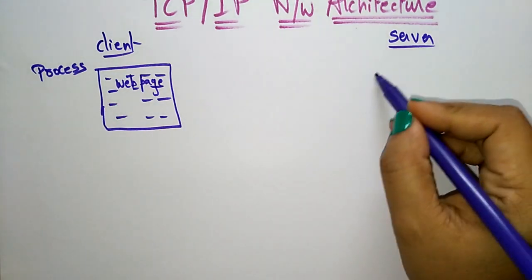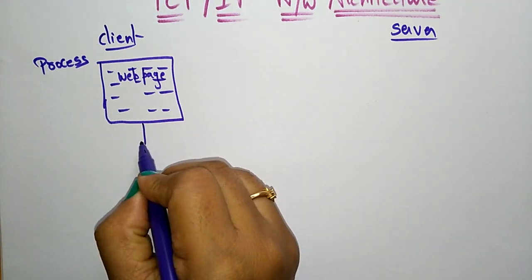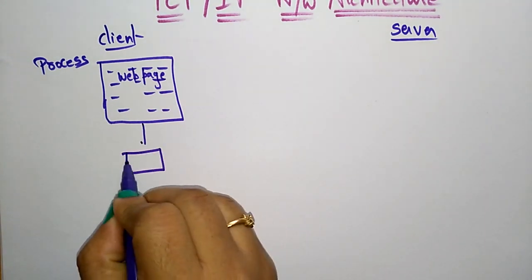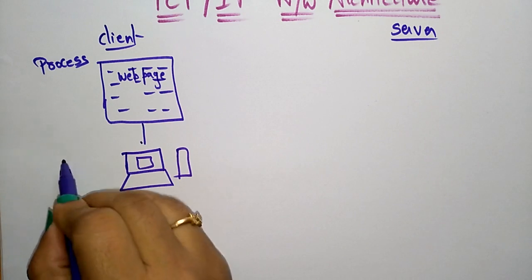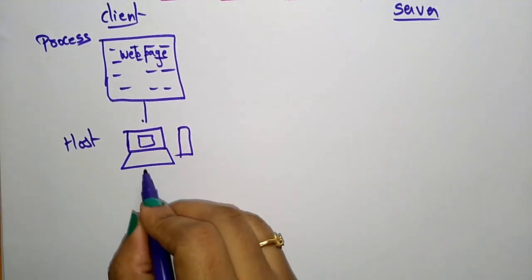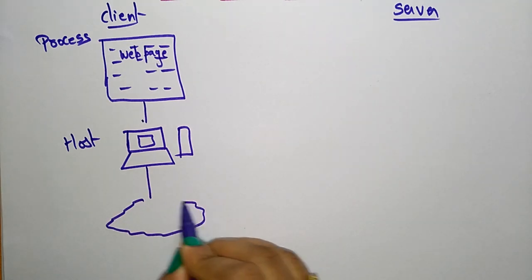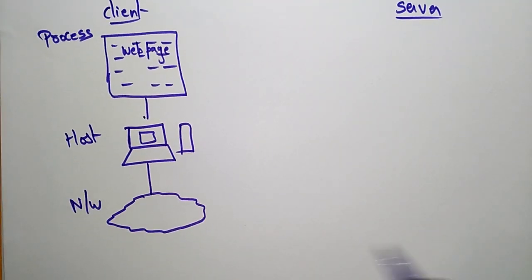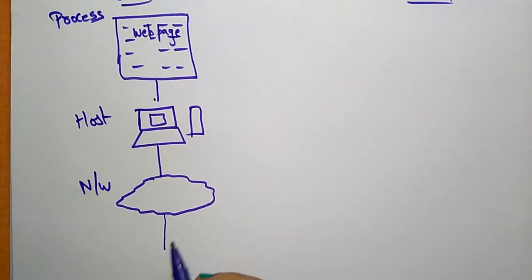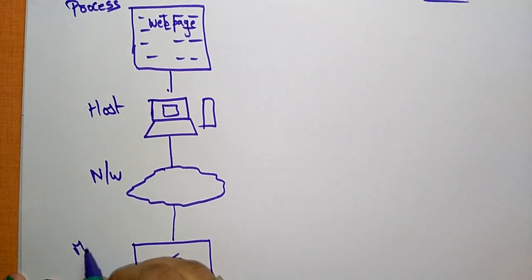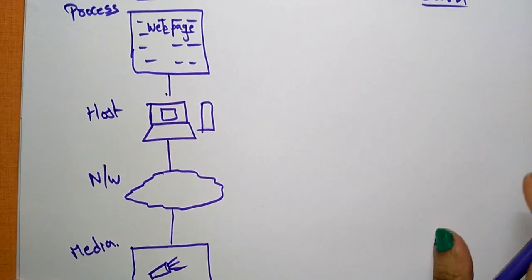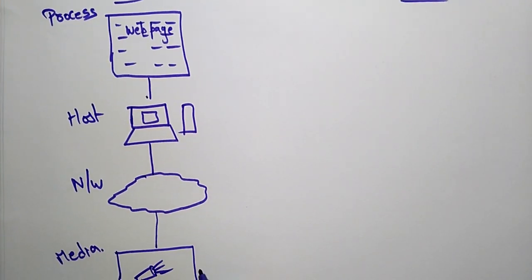First, this is a process. This process goes to the transport layer — whatever page I open goes to the transport layer, which is the host of the system. Next, it reaches the cloud, that is the network. It reaches the network with the help of a cable, which is a physical cable. We call it the media.